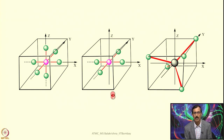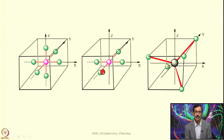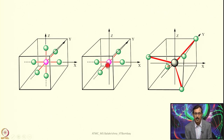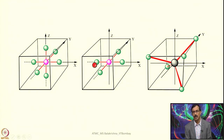Now let us consider a square planar complex, in which 4 ligands are approaching with the principal axis being z. In this case, the 4 ligands approach the metal ion from the x, -x, y, and -y directions. Since no ligands are coming along the z direction, that orbital is least affected, and the rest is very similar to what we saw in the case of octahedral complexes.